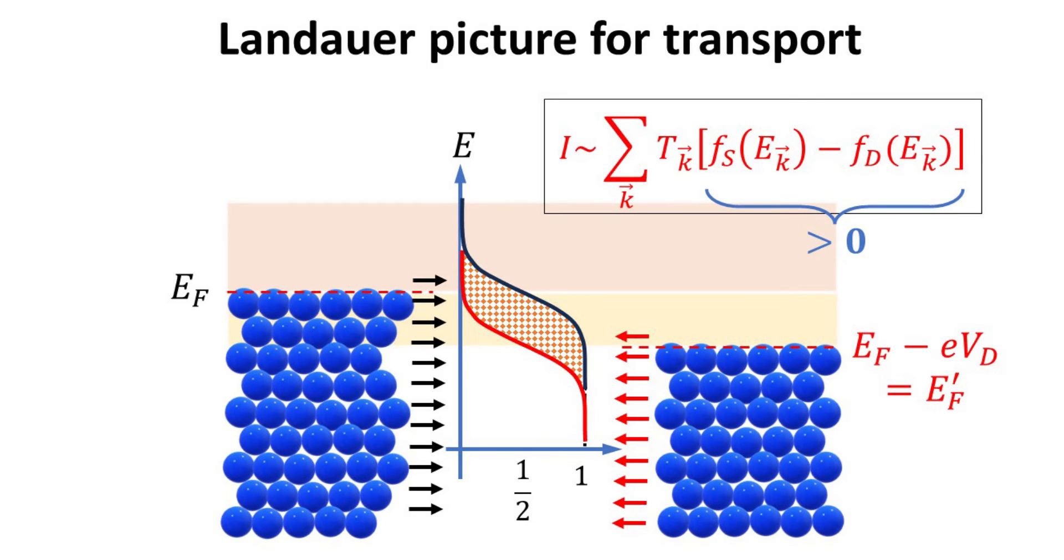Any applied bias between the two contacts, Vd, will produce a difference in the occupation functions, whose signs dictate the direction of the current.